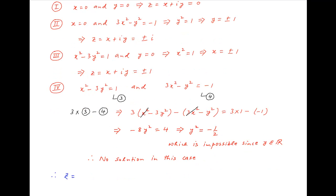Therefore, to summarize, the possible values of z are 0, plus or minus i, and plus or minus 1. And this is the required answer.